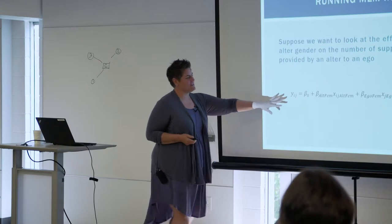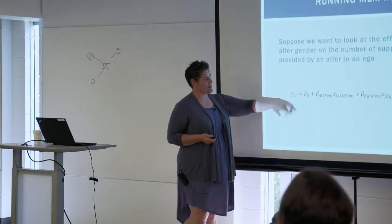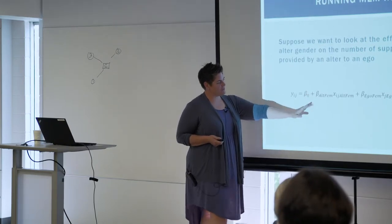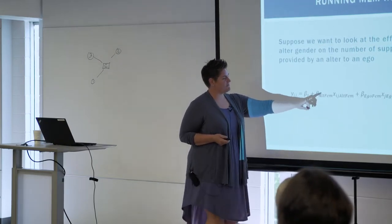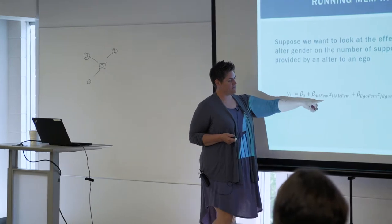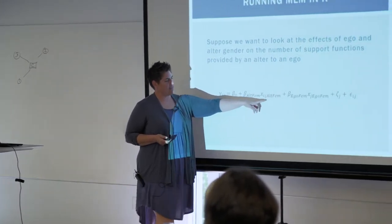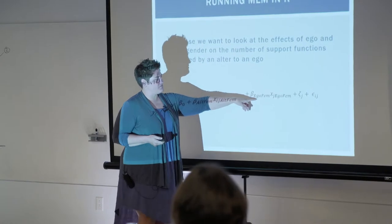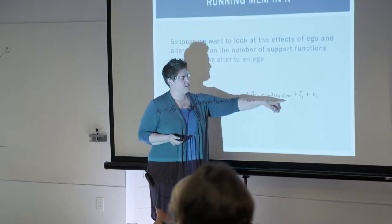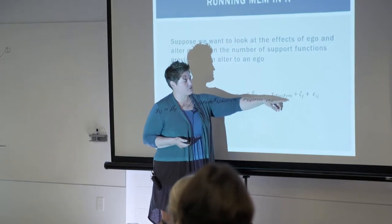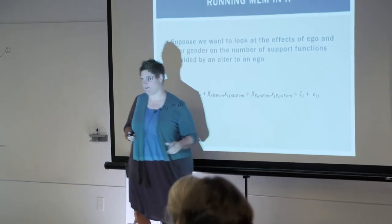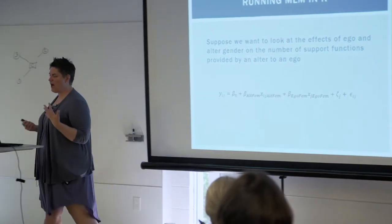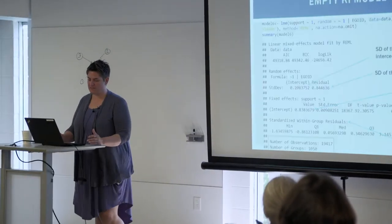So here's my regression function for this. I have my overall intercept, the beta for alter gender and whether that alter is male or female, a beta for ego gender and ego's actual gender, my random intercept, and then my error term. The outcome here is number of support functions.